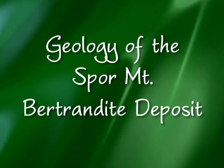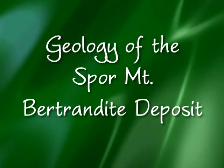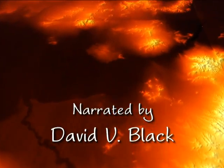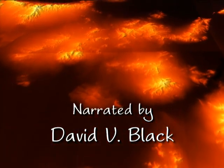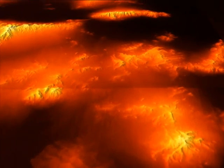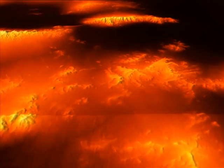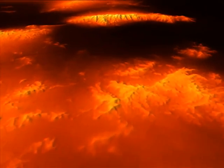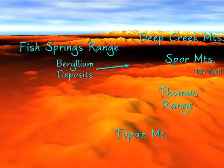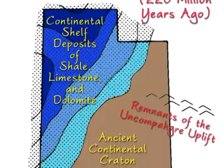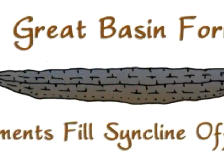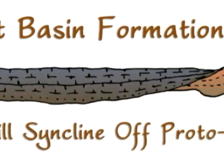To understand the origins of the beryllium deposits in the Spore Mountains, we have to go back to when Western Utah was still under the ocean. For hundreds of millions of years, this ocean floor built up gradual layers of shale, limestone, sandstone, and dolomite.